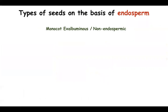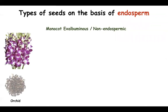On the basis of endosperm, there are also monocot exalbuminous or non-endospermic seeds — seeds which do not have any endosperm. For example, orchid seeds, which form beautiful orchid flowers, have no endosperm. In these seeds, the cotyledon stores food.